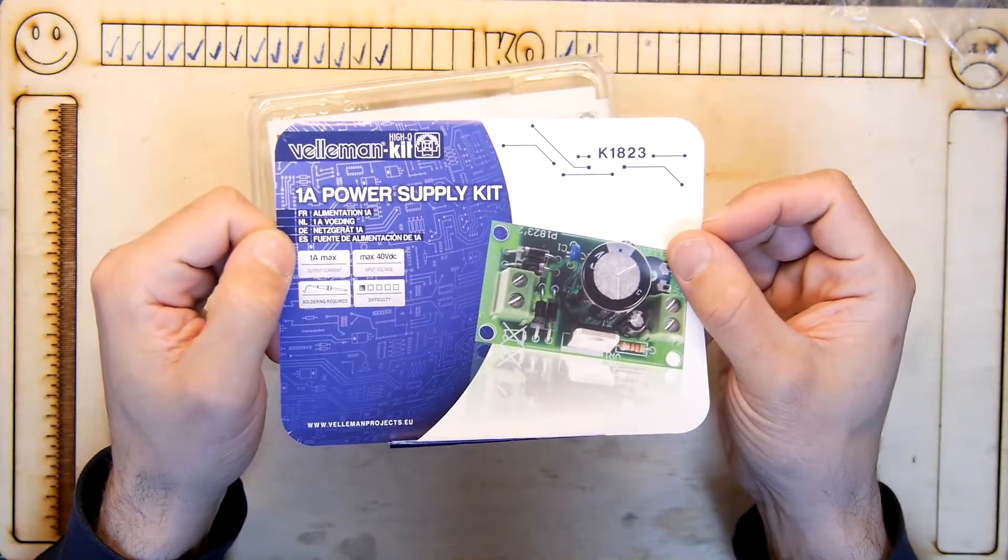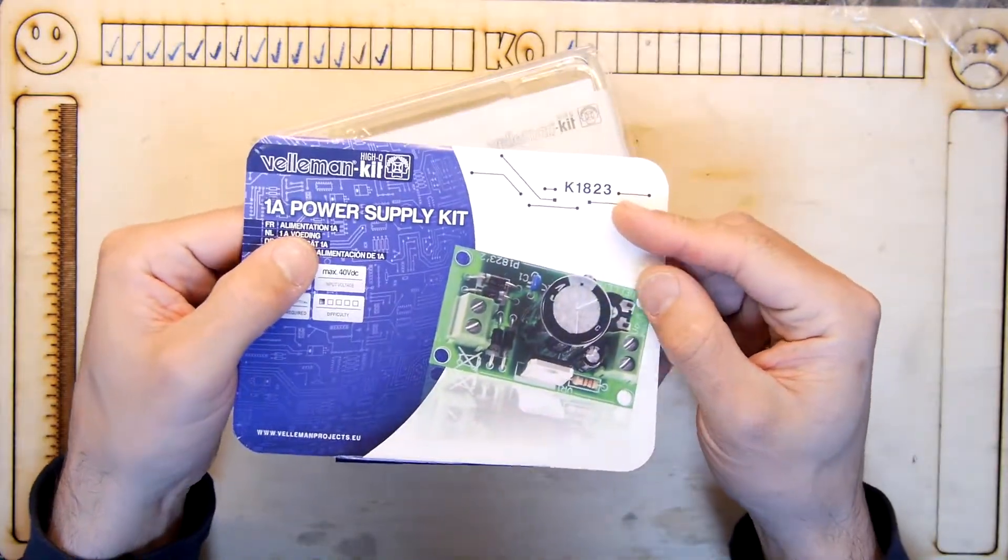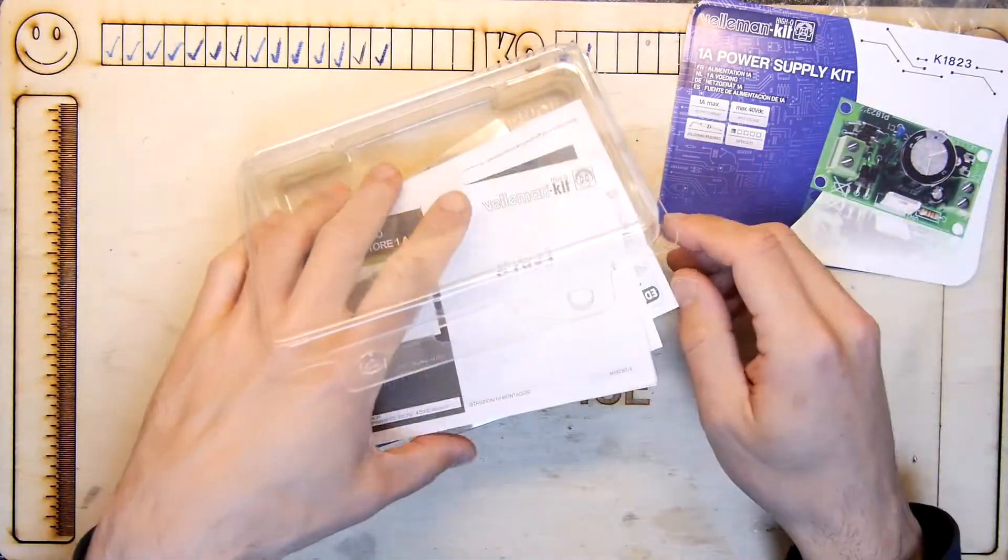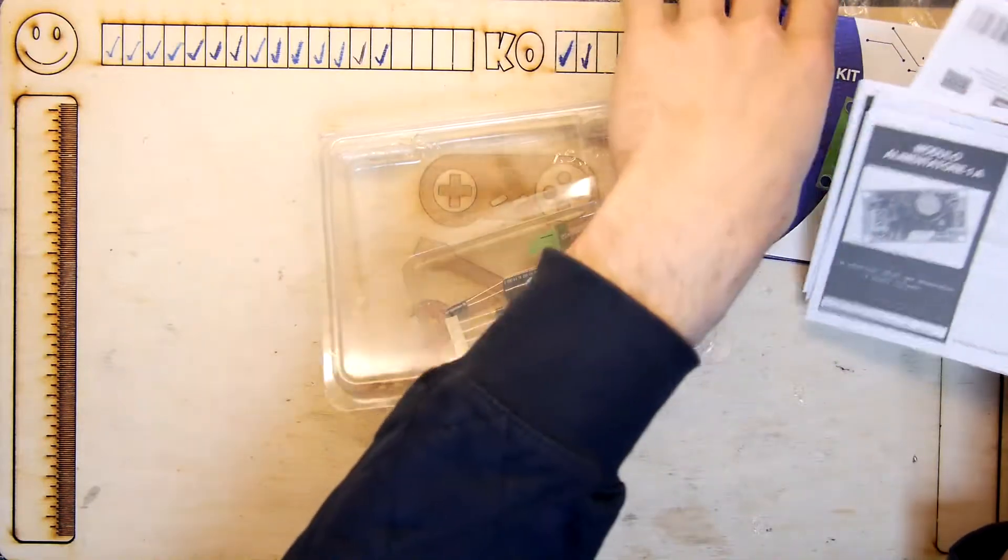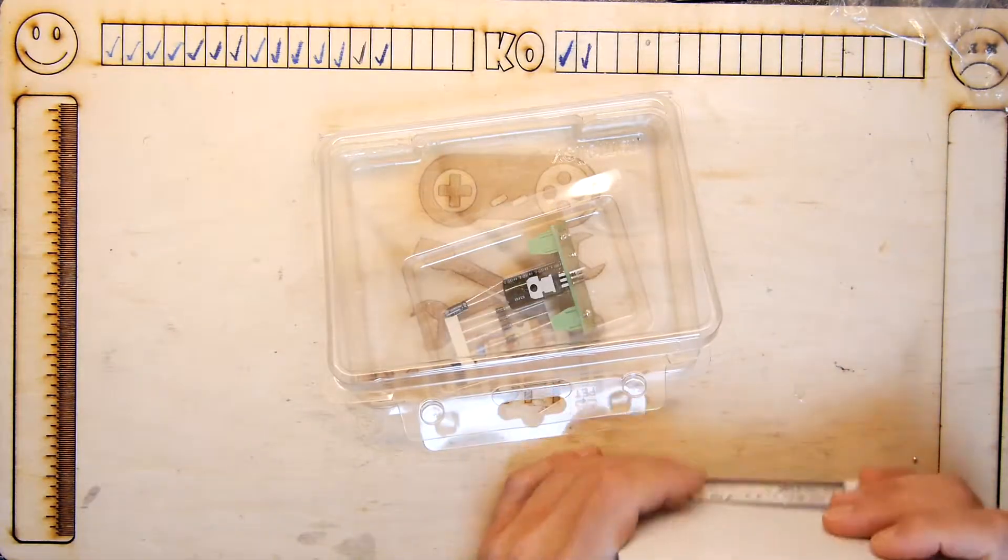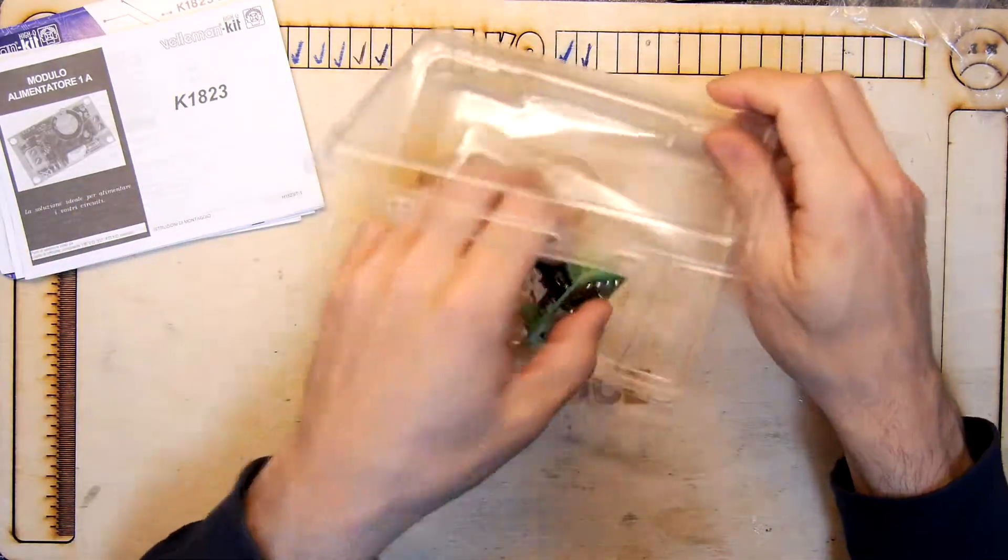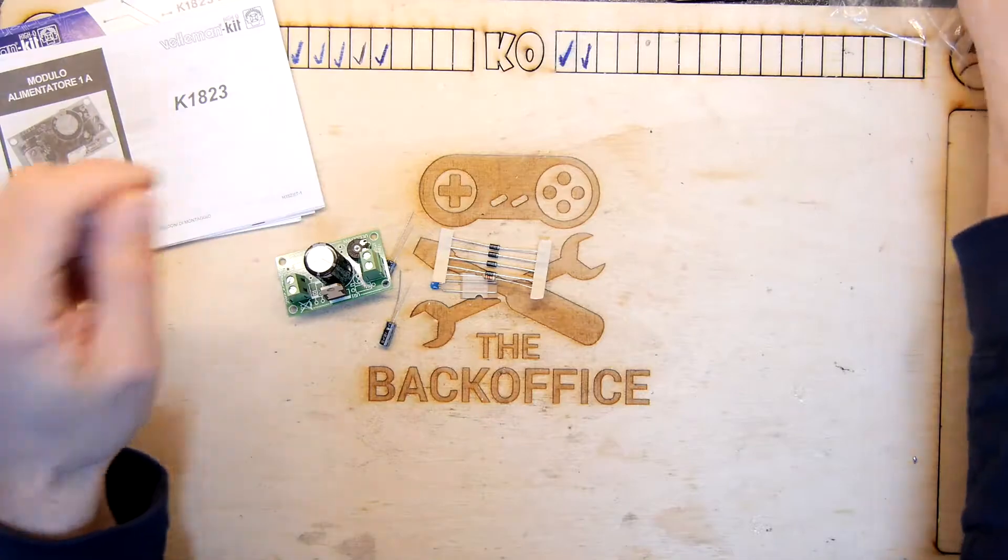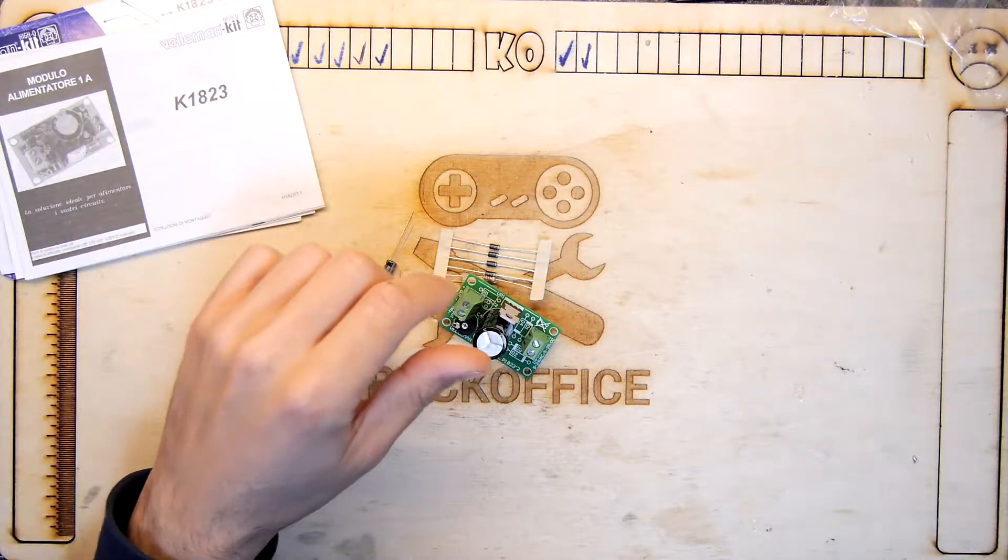It's a one amp power supply by Vellman and it's a K1823. So if you're playing along at home, you can probably buy this kit from your local stockist. Well, probably in the UK, Maplin or CPC. He's left all of the fun bits for me to do. It looks like actually the worst has been done.